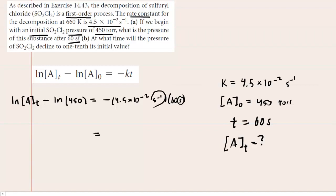And then when we calculate the value on the right side, we get negative 2.7 without any units. We can then also compute the natural log of 450 on our calculator, which is about 6.11.